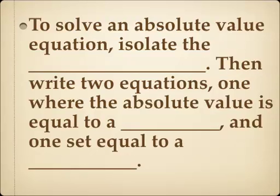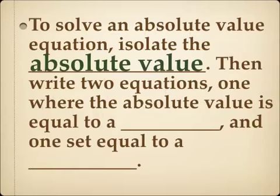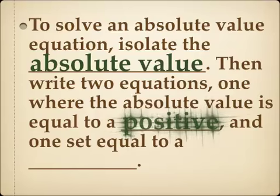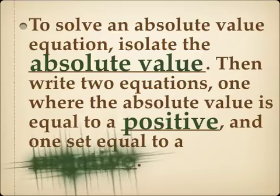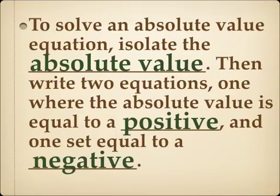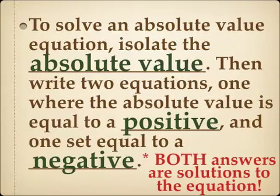To solve an absolute value equation, you're going to isolate the absolute value, then write two equations — one where what's inside the absolute value is set equal to a positive number, and one where it's set equal to a negative number. Both answers are going to be solutions to the equation.